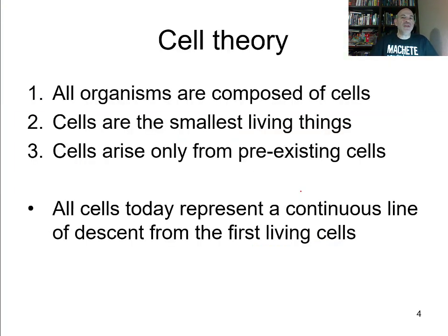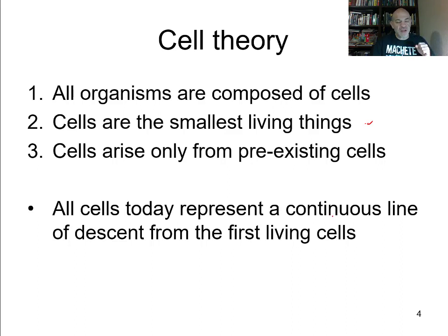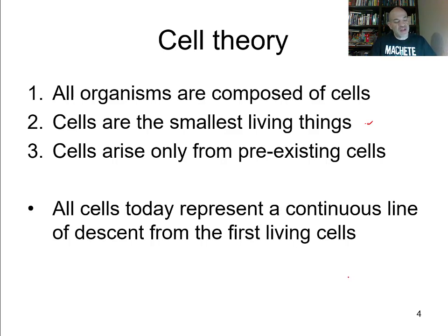Cell theory states that all organisms are composed of cells, and cells are the smallest units of life. Cells can only arise from pre-existing cells — you can't just make cells from nowhere. We trace life all the way back to when life first appears in the fossil record about 3.5 billion years ago, starting as one simple single-celled organism similar to bacteria we see today. All living things have arisen through changes and mutations from a continuous line of descent from the first living cells on the planet.